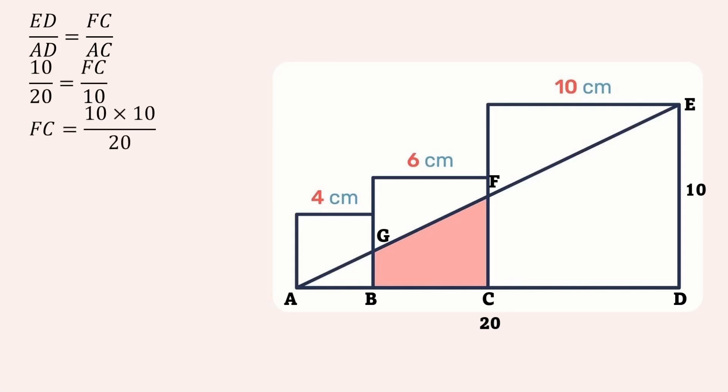Next, we can find side BG. We use the ratio ED to AB equals GB to AB, where AB is 4. So GB will be 10 times 4 divided by 20, which gives us 2 centimeters.